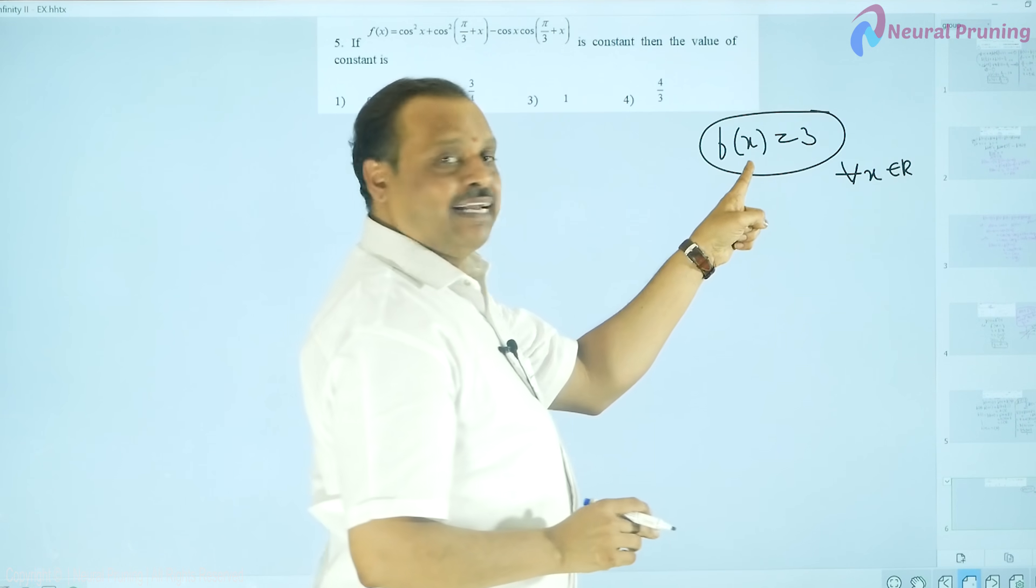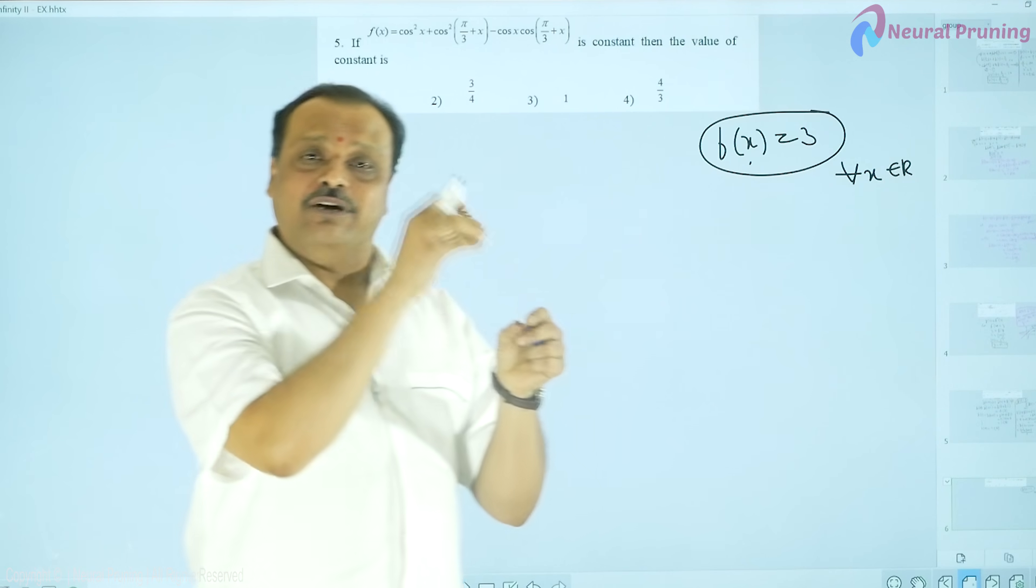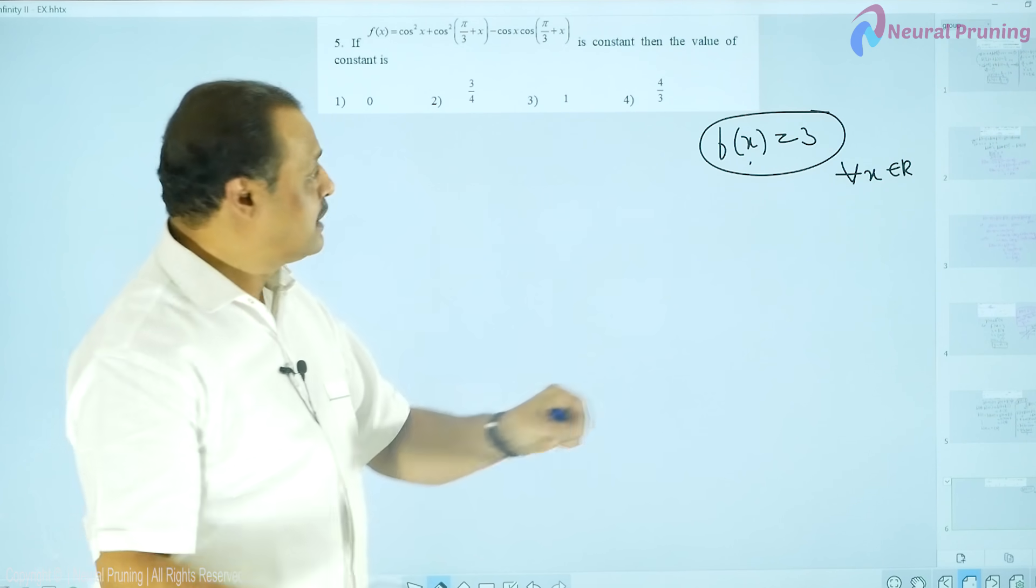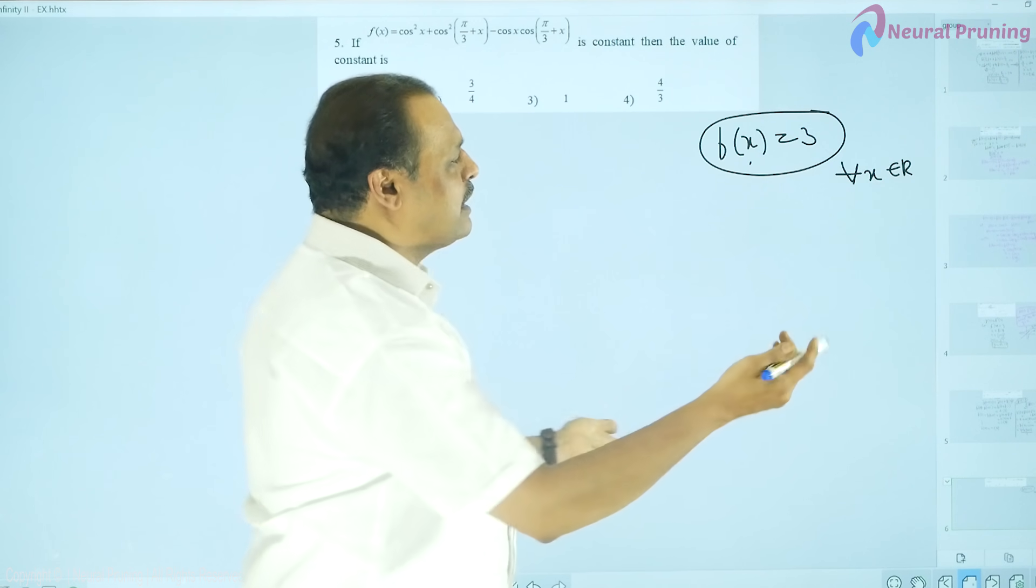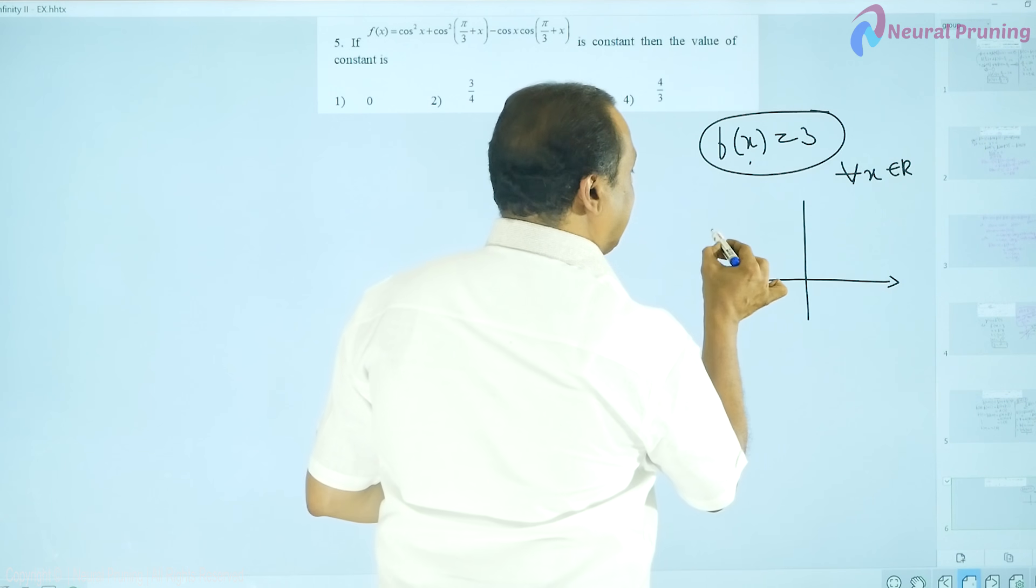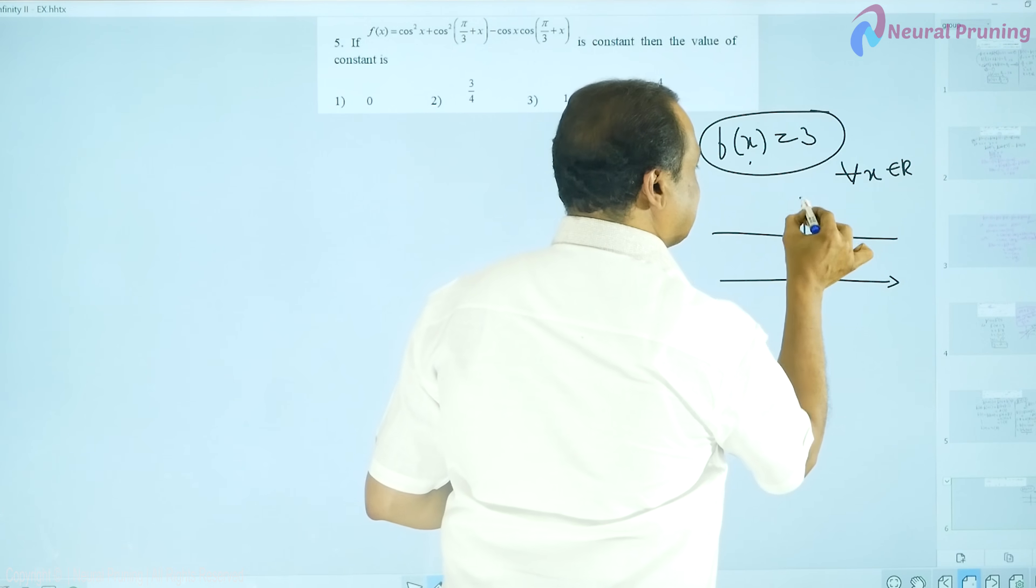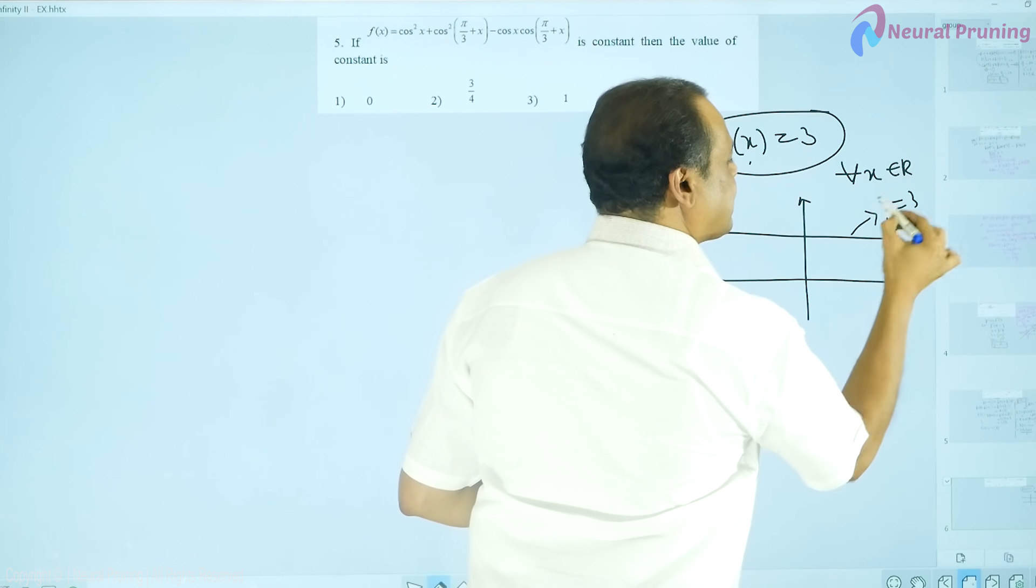For every value, f of 1 is 3, f of 2 is 3, f of 4 is 3. In that way, for every value of real number, f of x takes the value 3. And even you can analyze it through the geometrical form also. A constant function is a line parallel to x axis. So this is what y is equal to 3.